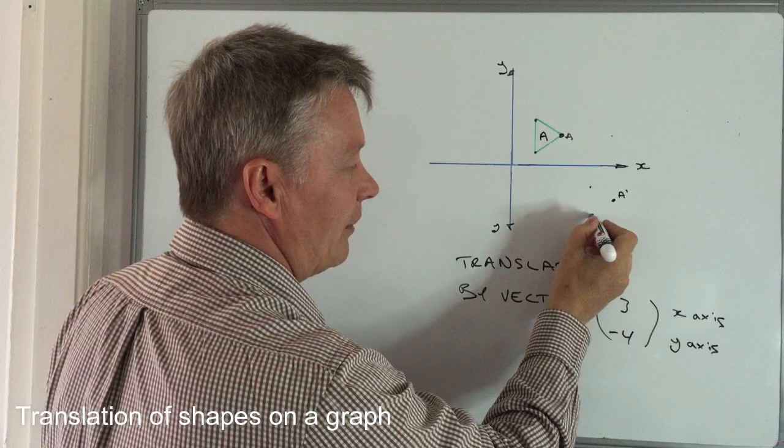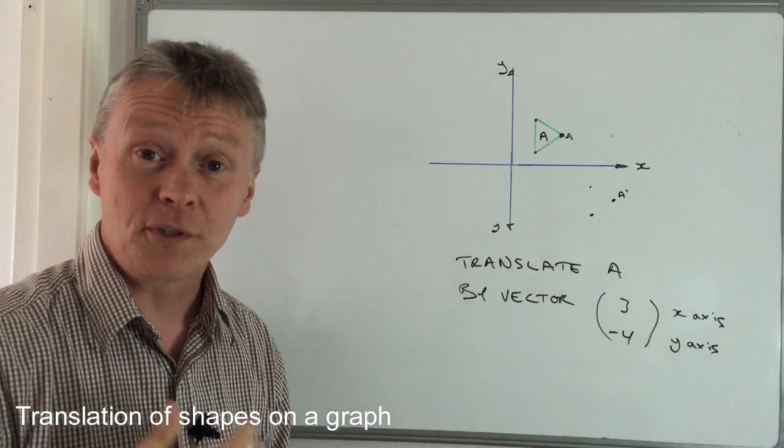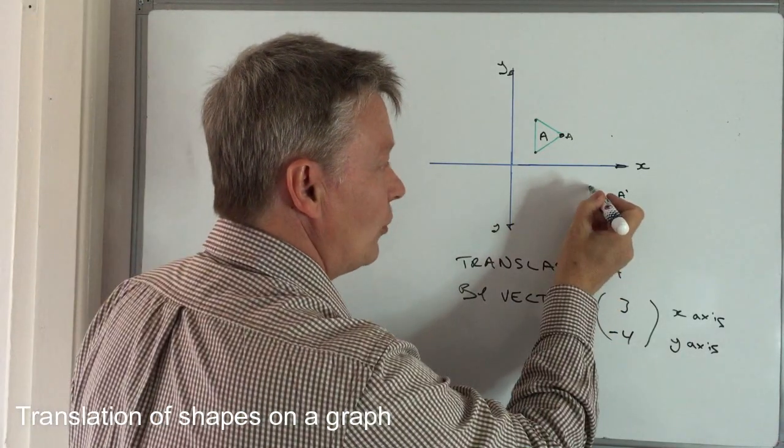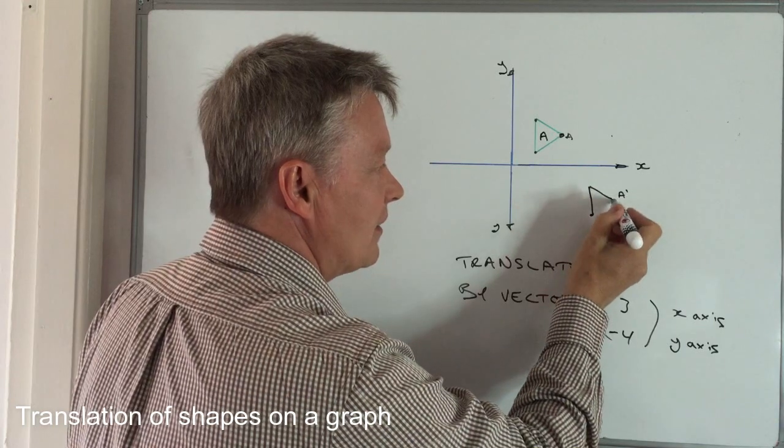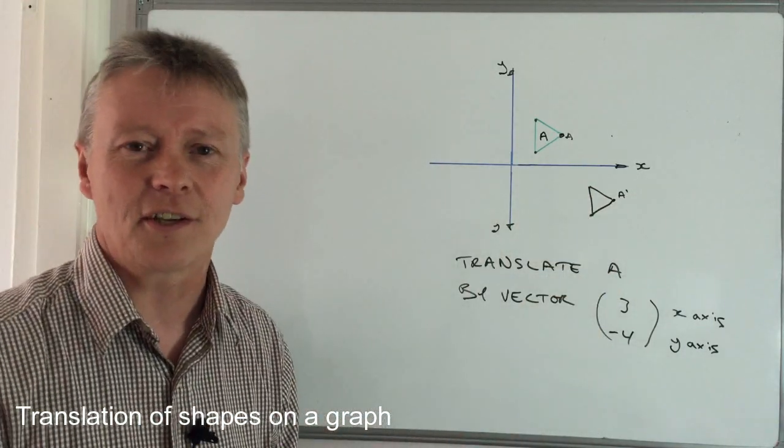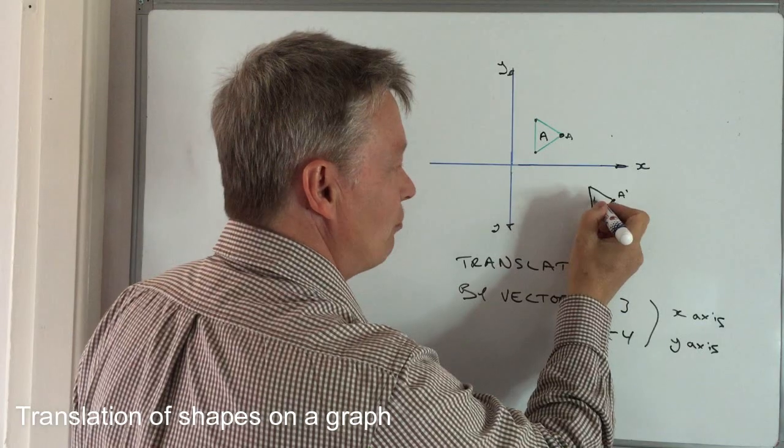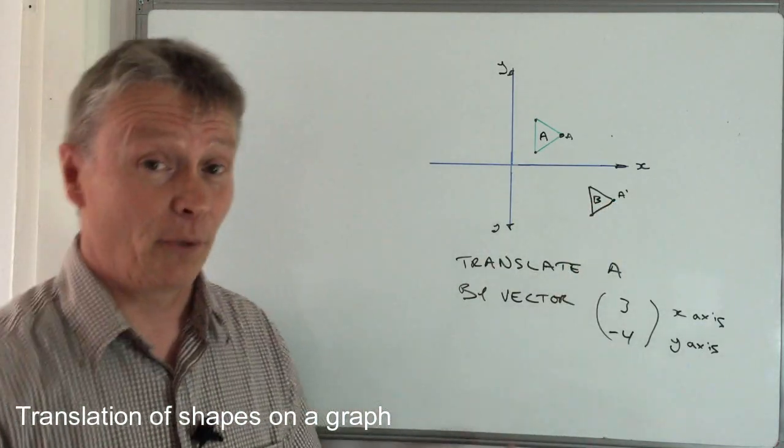And then I would simply just draw the line in to make this the new shape. And usually they'll say something like 'label it shape B,' and that would answer this particular question.